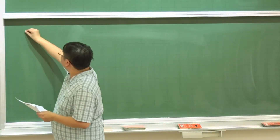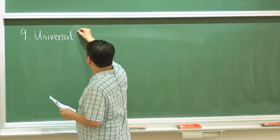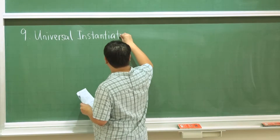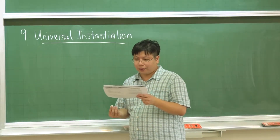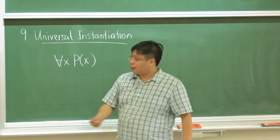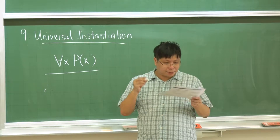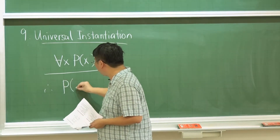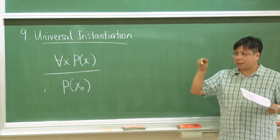There is also universal instantiation. 'Universal' relates to 'for all.' If we are given the premise that for all x, P(x) is true, then for any particular specific x₀ that we look at, P(x₀) will be true. We call it 'instantiation' because we look at a particular instance of this universal argument.